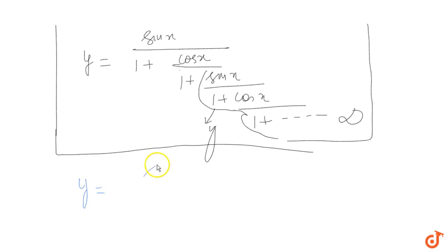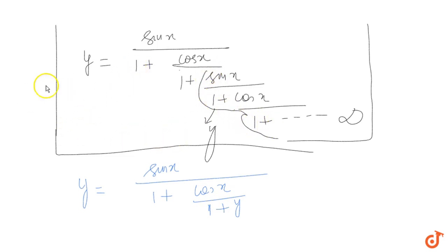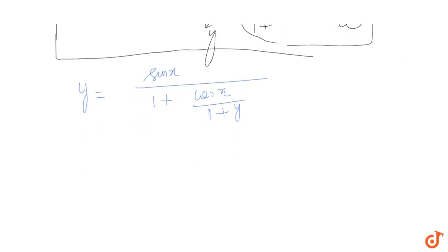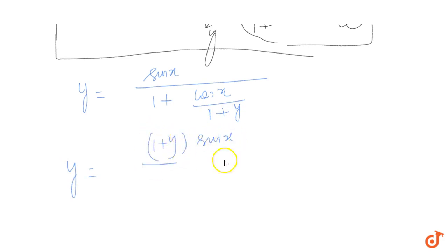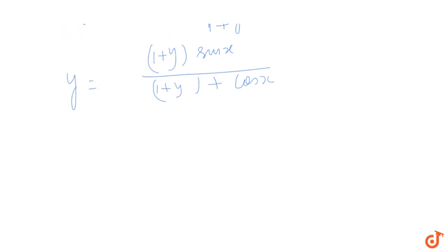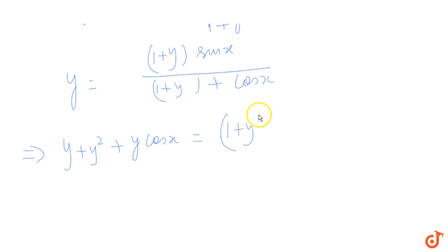The new simplified expression becomes y equals sin x upon 1 plus cos x upon 1 plus y, because the repeating part is y itself. Solving this, 1 plus y goes to the numerator, giving us y plus y squared plus y cos x on the left-hand side, and sin x times 1 plus y on the right-hand side.